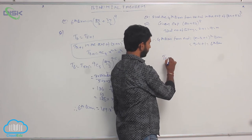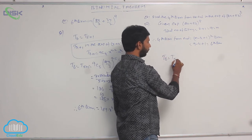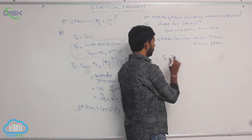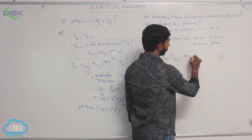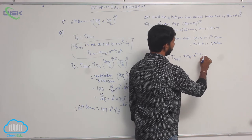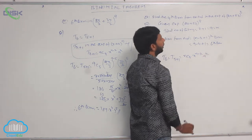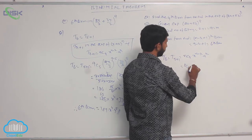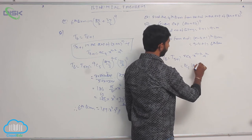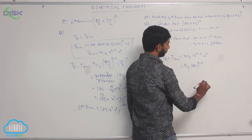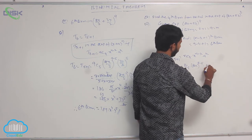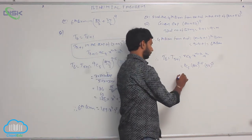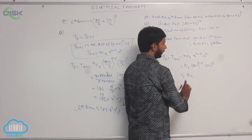Now find T6 = T(5+1). Using the formula with n = 8 and r = 5: 8C5 · (2a)^(8−5) · (5b)^5 = 8C5 · (2a)^3 · (5b)^5. Since nCr = nC(n−r), 8C5 = 8C3.